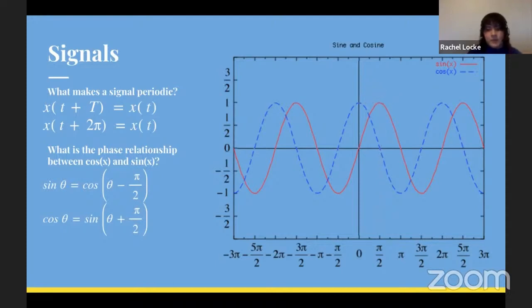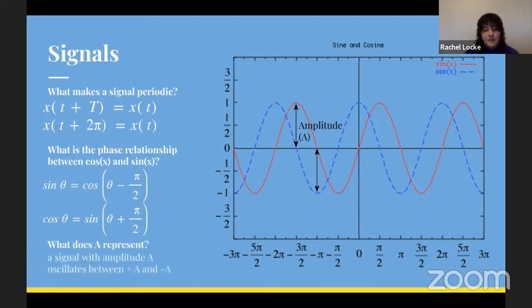The final quantity I'll mention is amplitude. Amplitude is a scaling factor which in reality translates to a perceptual loudness of a signal. What does the a represent in amplitude? A signal with amplitude a oscillates between plus a and minus a, so we can see by looking at our sinusoids that they oscillate between plus 1 and minus 1, meaning that our amplitude is 1.